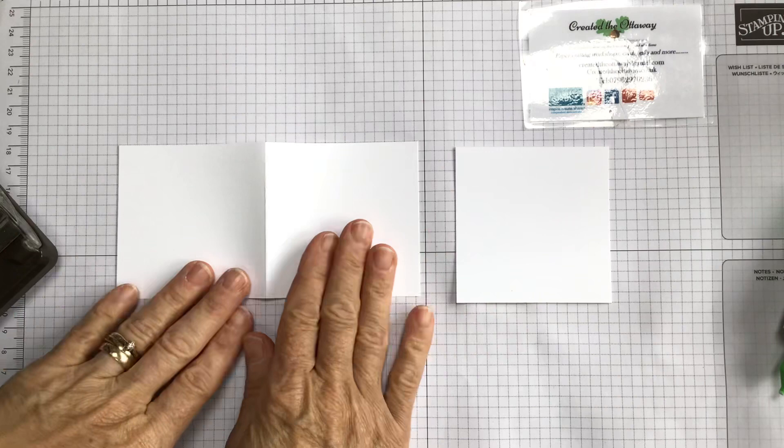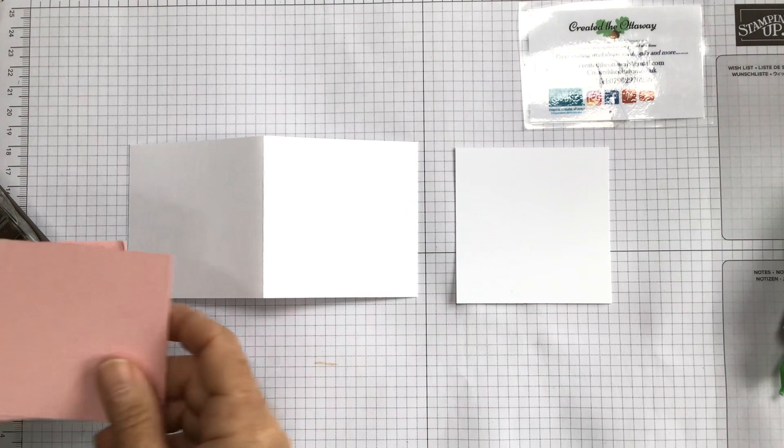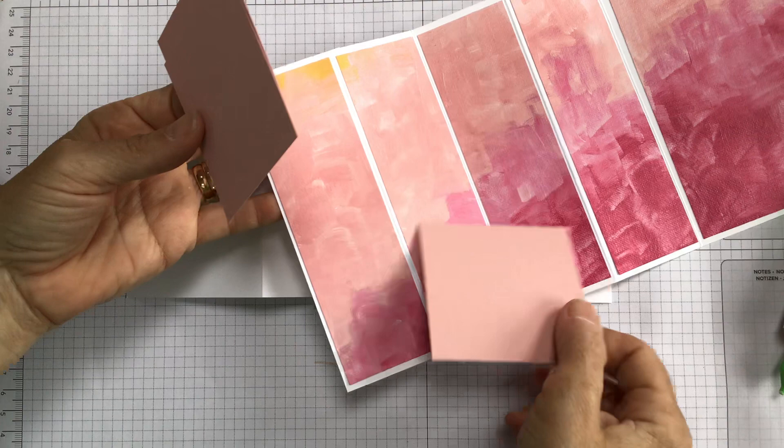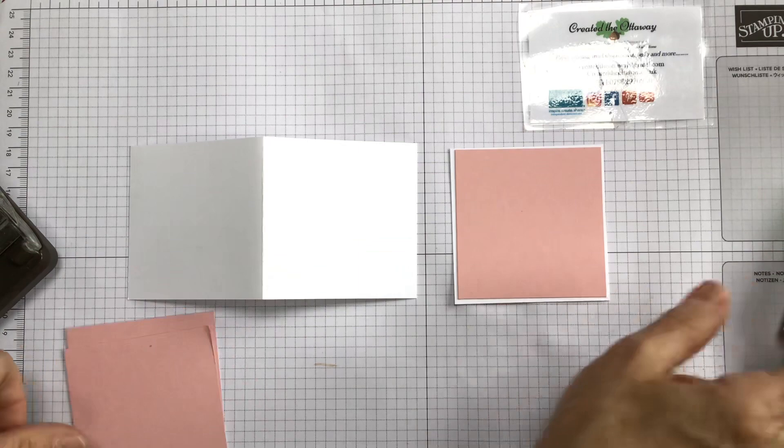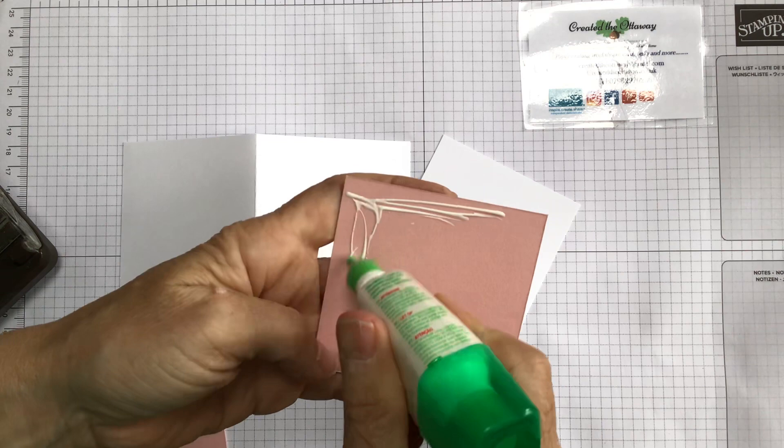Right, so the panel that goes in the middle, this bit and this bit, I'm going to cut those next. I have cheated. I've cut them off of camera. So you need a square that is three inches by three inches, and then you need a rectangle that is three inches by three inches, and you need to score it in the middle, so in half.